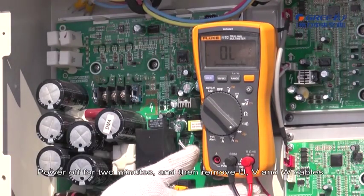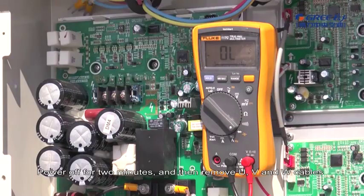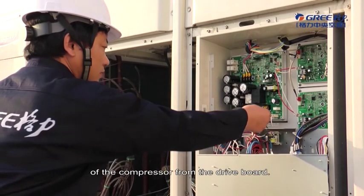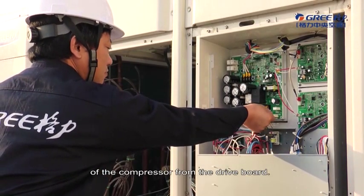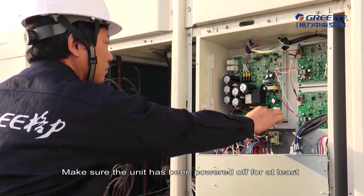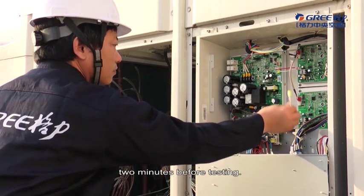Power off 2 minutes and then remove U, V, and W cables of the compressor from the drive board. Make sure the unit has been powered off for at least 2 minutes before testing.